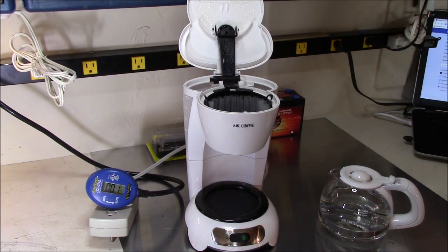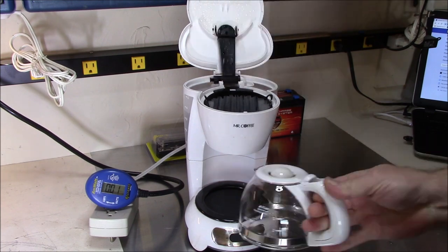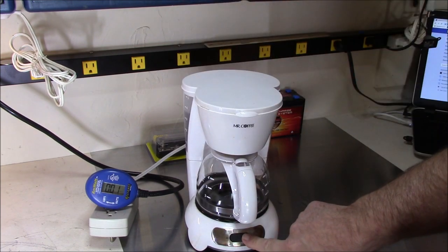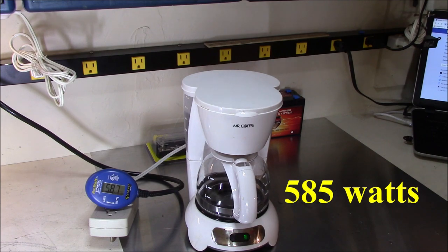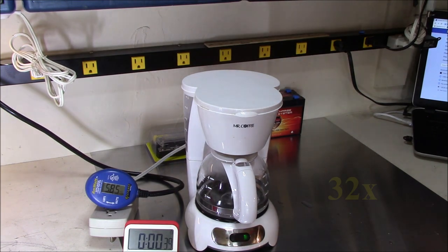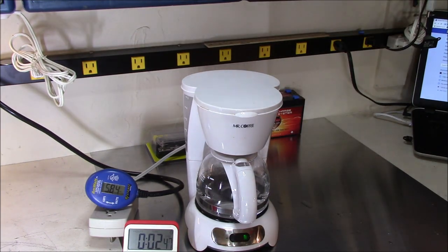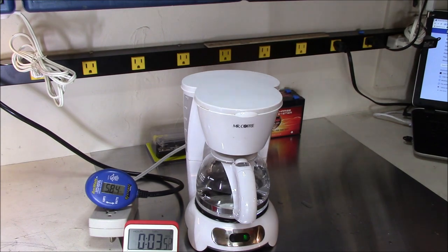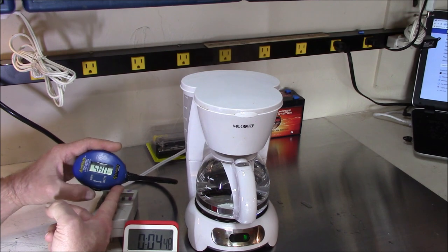So now I'm setting up this Reliance Controls UL-listed watt and amp meter to do a little comparison and see what this one reads. Check this out: 585 watts. And the kilowatt meter read 615 watts, so about a 30-watt difference. Just put the little timer in to show you how long it takes—it's just under five minutes.